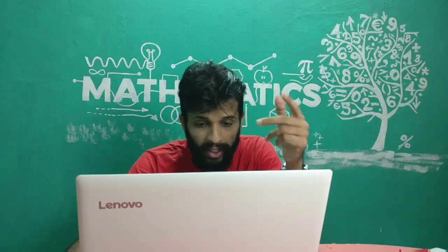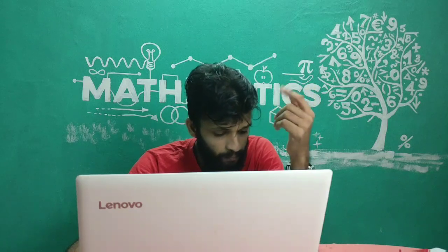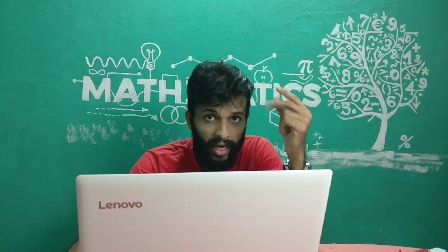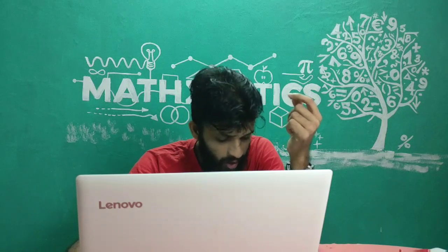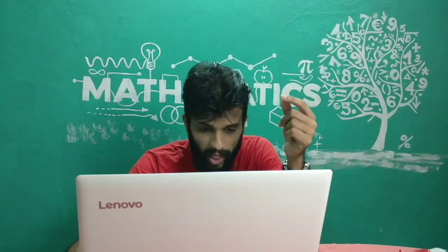The next part involves the elimination method and cross multiplication method — two sets of problems where you solve any one. The correct answer for the elimination method is x equals 1 and y equals 2, and for cross multiplication it is x equals 7 and y equals minus 1.